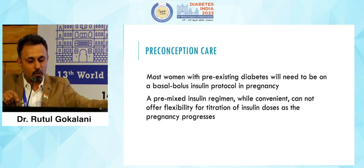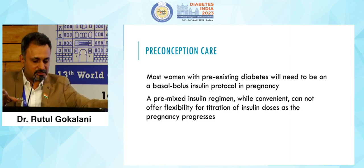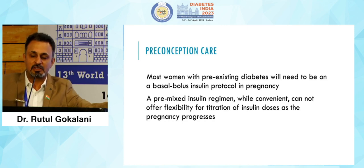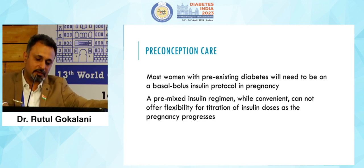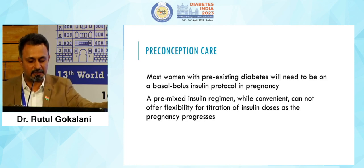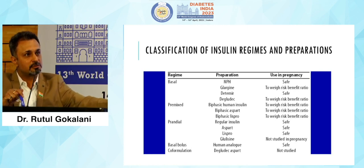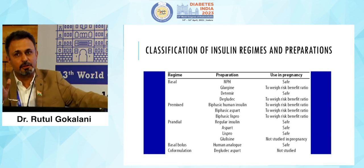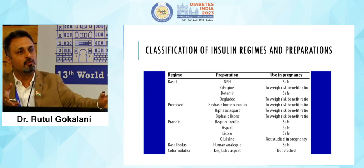Drugs that do not cause hypoglycemia like DPP-4 inhibitors, GLP-1, or SGLT-2 can be started, but patients should be explained that if they are actively planning pregnancy and visiting their obstetrician regularly, they should be on basal bolus insulin therapy only. Most women with pre-existing diabetes will need a basal bolus insulin protocol in pregnancy. Premix insulin cannot offer flexibility for titration as pregnancy progresses and should not be prescribed.